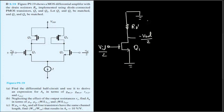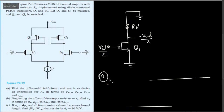We can use this differential half circuit to derive the small signal equivalent model. In the small signal model, the drain is on top, the source is on the bottom connected to ground. From drain to source we have a current flow, and since there is no current flow into the gate of a MOSFET, we handle the gate separately.